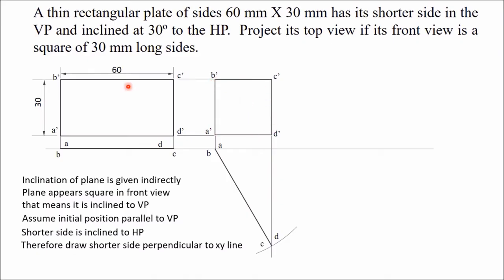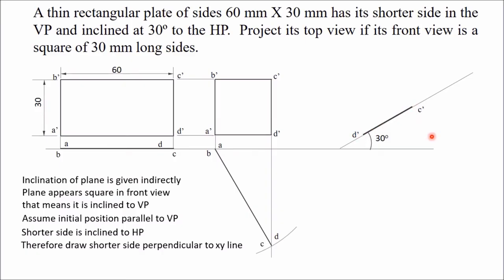Third stage: we have to tilt this square so that one side makes 30 degrees. We kept A'B' perpendicular to XY line, so we will now make A'B' inclined at 30 degrees. A'B' and C'D' are both parallel to each other. You can draw this rectangle inclined at 30 degrees by taking either side C'D' or side A'B'. Draw one line at an angle of 30 degrees. In this line, mark point D' first, then take the same length equal to D'C' and mark point C'.